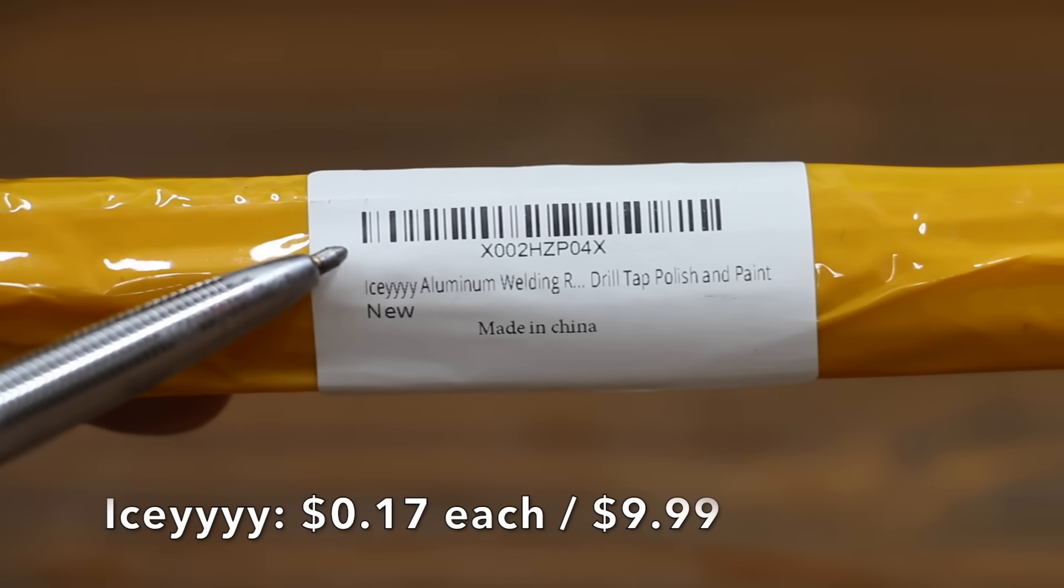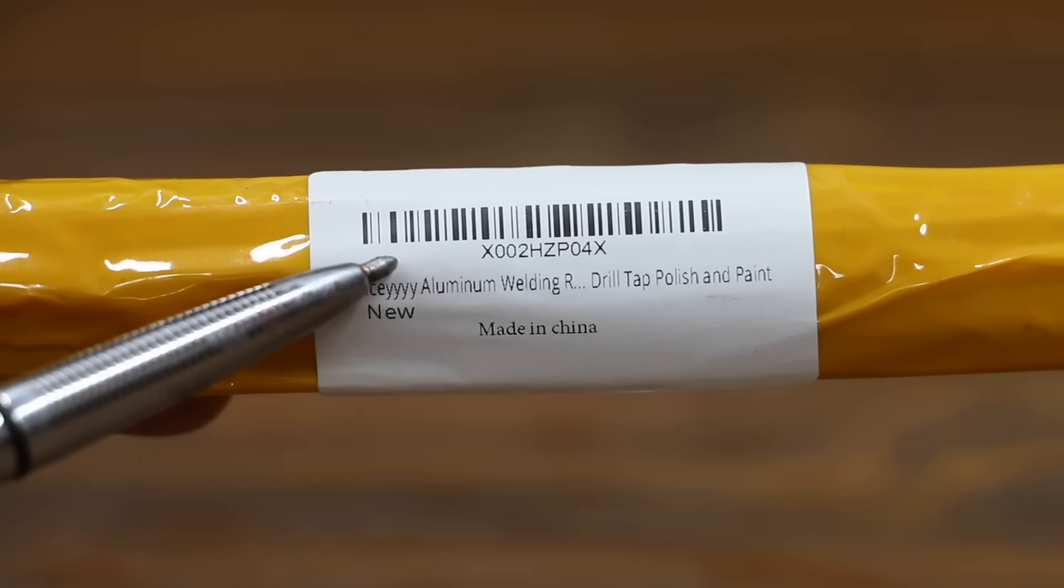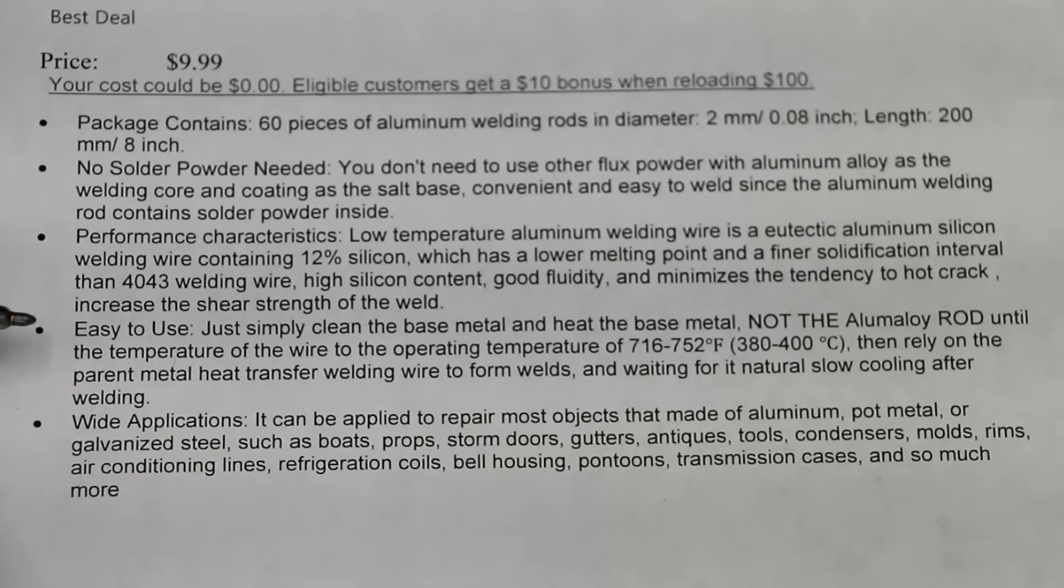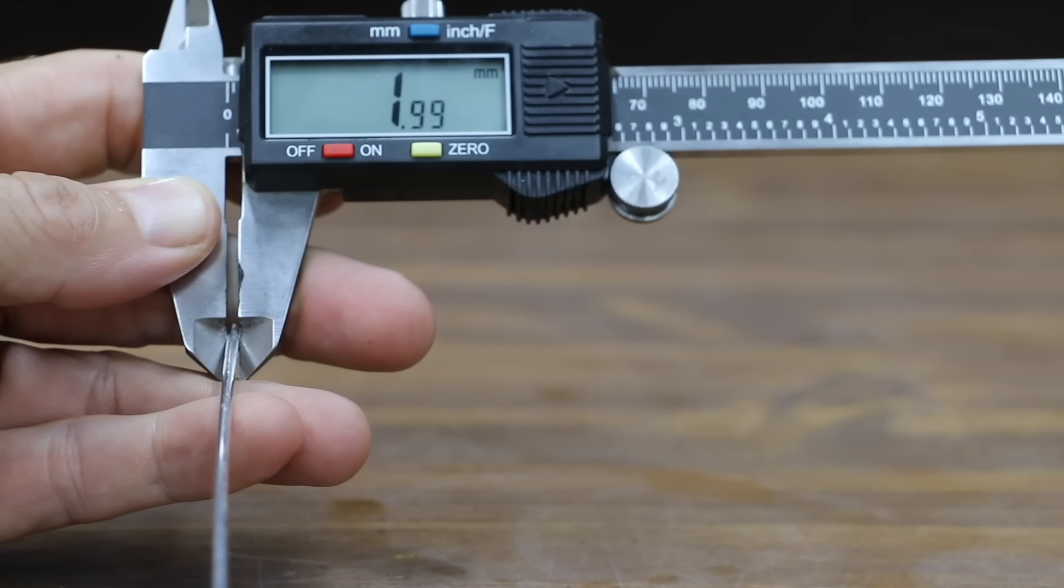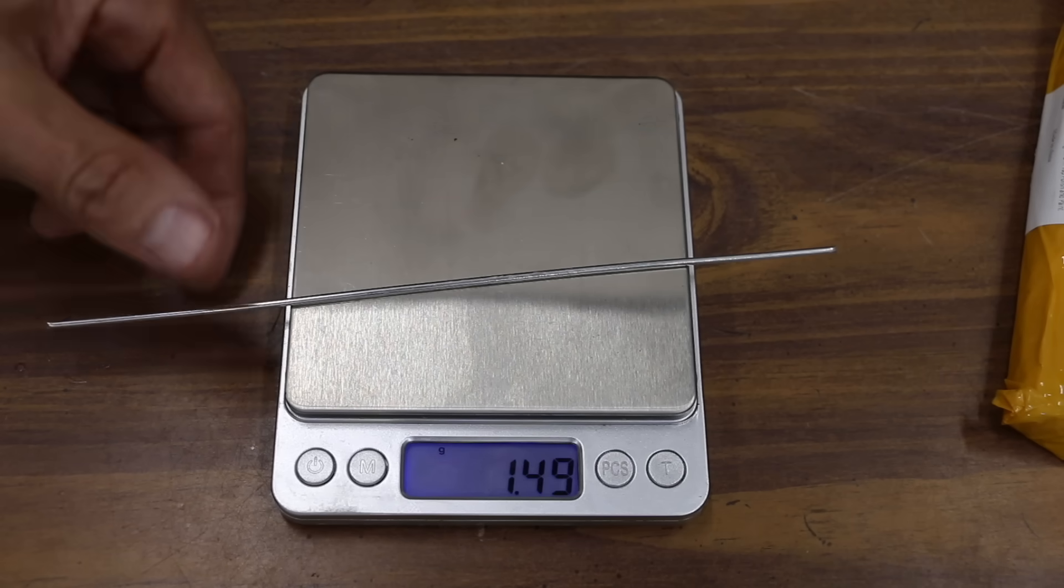At a price of only $9.99 for 60 welding rods, or $0.17 each, is this Icy brand. Easy to use, just simply clean the base metal and heat the base metal, not the aluminum rod, until the temperature of 716 to 752 degrees Fahrenheit. Made in China. These welding rods are very close to 2 millimeters in thickness. The welding rod only weighs 1.49 grams.